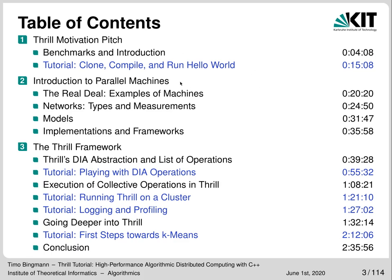Part two is about knowledge on parallel machines and distributed computing. We all know parallel programming is hard, but it is even harder or downright impossible if you know too little about the machines you are programming. Since there is a wide variety of parallel machines and interconnection networks, we will first cover those and then look at models and frameworks which make programming them easier. This part lays the groundwork for better understanding the challenges we try to tackle with Thrill.